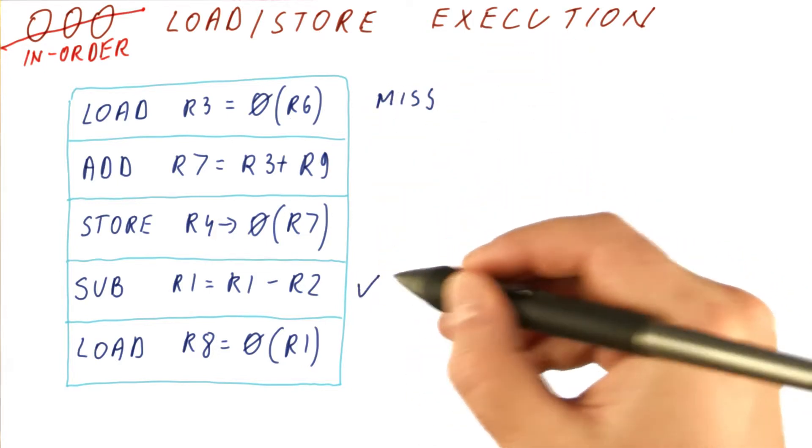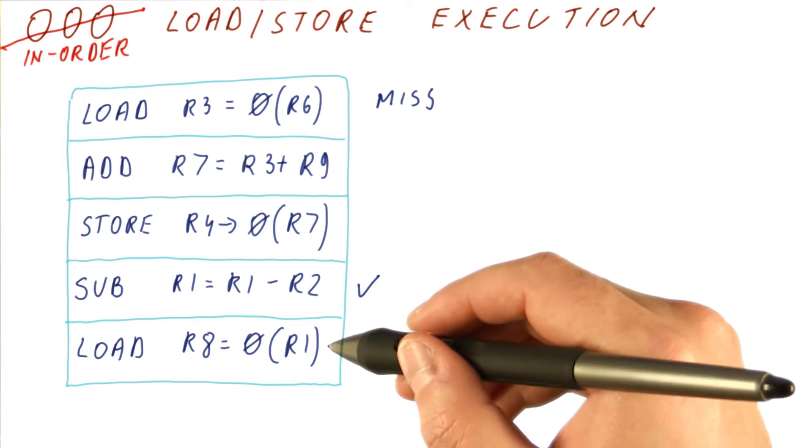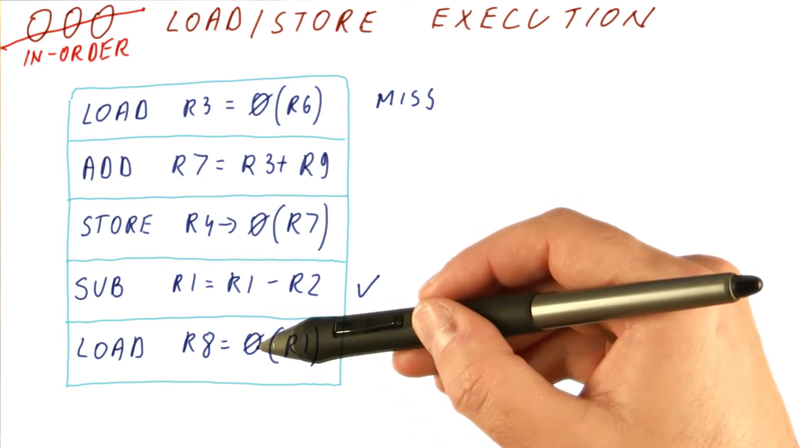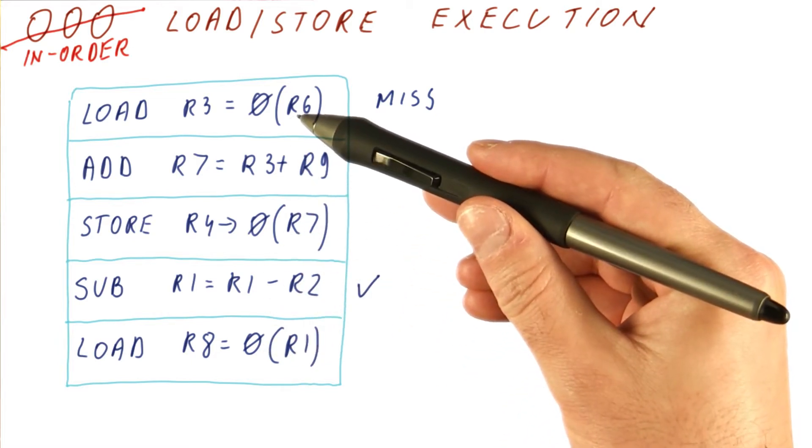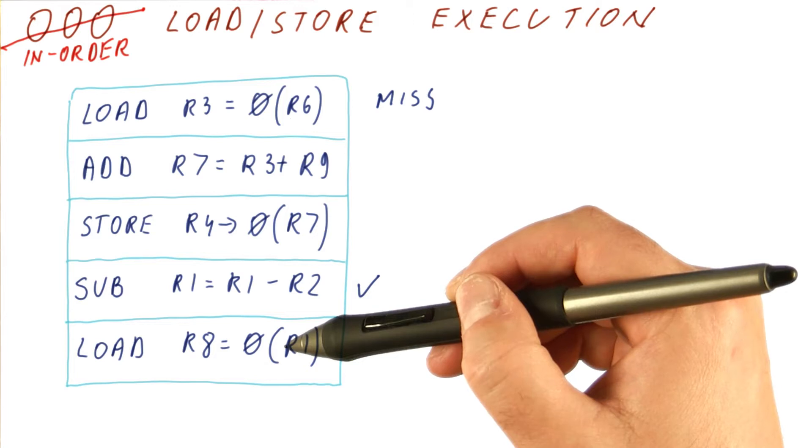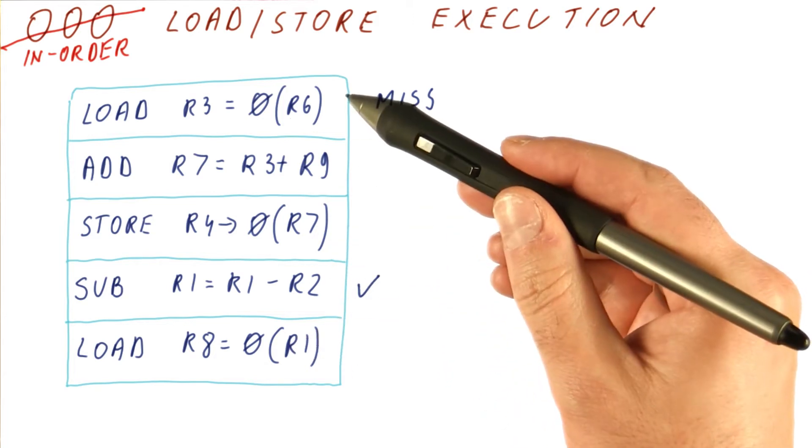The subtraction gets done. We now know the address for this load. At that point in the load store queue, we will check whether there are any preceding instructions that might eventually resolve to the same address. Or even worse, we check whether all preceding instructions are done.